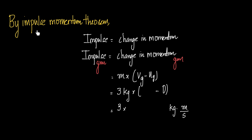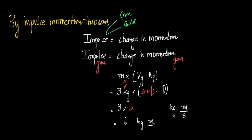Coming to the final part: by the impulse-momentum theorem, impulse equals change in momentum. We are specifically finding the impulse of the gun, so impulse of gun = change in momentum of gun = Mg × (Vg_final − Vg_initial) = 3 × (2 − 0) = 6 kilogram·meters per second.